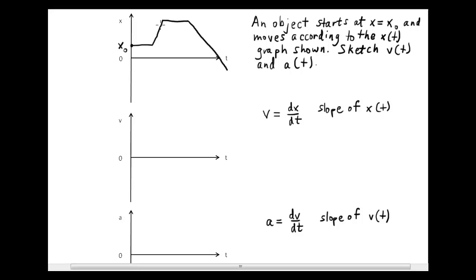First, we'll start with position and think about what this graph means. The position stays at x₀ for a certain amount of time — the object is not moving. Then the position increases in a straight-line fashion, which is important, and reaches another value of x and stays there as a horizontal straight line. Then the x value decreases in a straight-line fashion in the last segment. So this behavior is broken up into four different straight-line segments.